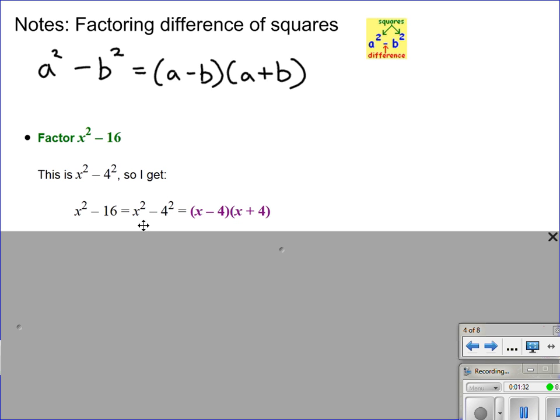My a's going to be x, my b's going to be 4, and I just plug in the formula and I'm done. x minus 4 times x plus 4, that is the end of the problem.